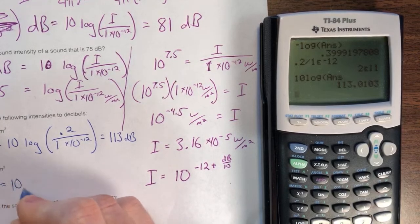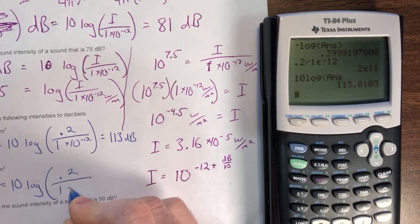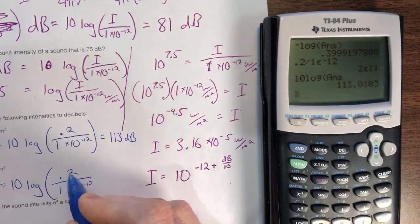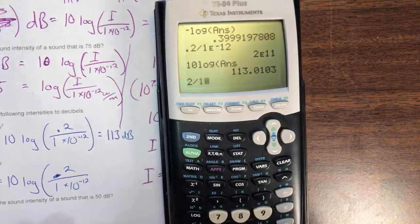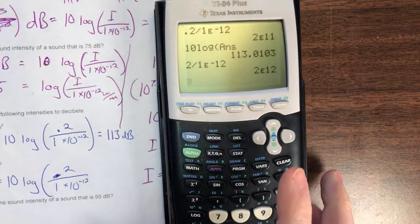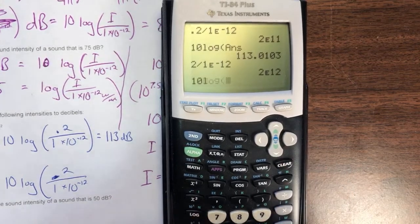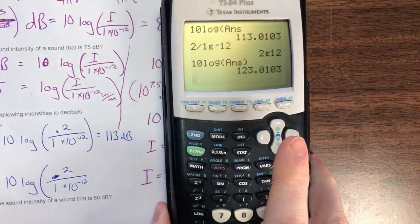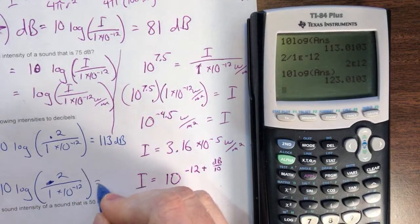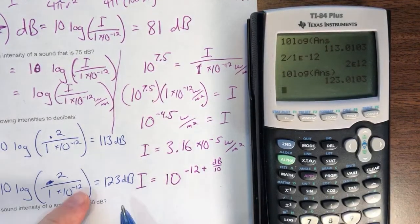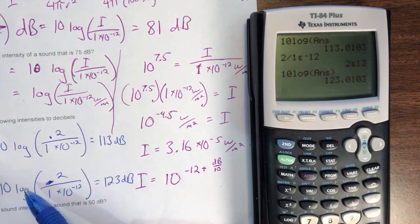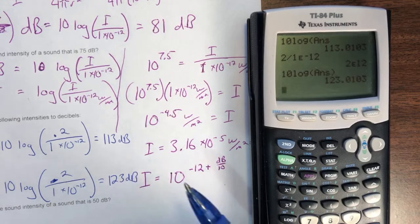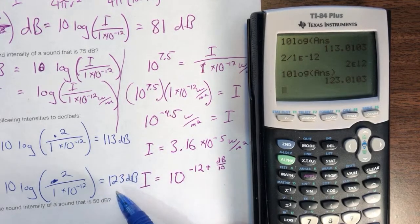Each time you go up 10-fold in intensity, it's going to be 10 more decibels. Now the loudness doesn't seem 10 times as loud — it might only seem twice as loud or something like that. The loudness is not 10 times as loud, but the intensity is, because your ears work more on a log scale.